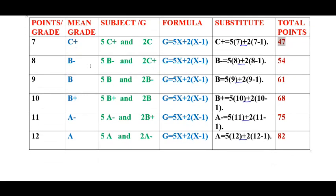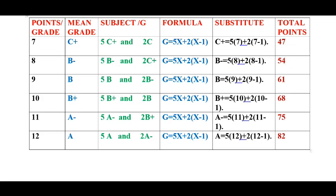For students who want to score B minus, you need to have five subjects in which you score B minus, and then two subjects in which you score C plus. In total you will have 54 points. I have substituted the value in the formula — B minus has a value of eight — and you get a total of 54 points.